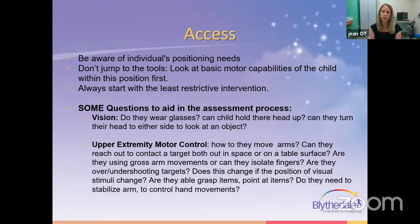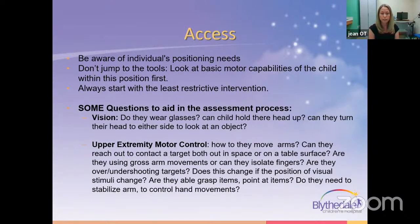During an access evaluation, we assess the child's vision — do they wear glasses, can they visually focus, track, and turn their head to follow an object? We look at upper extremity motor control — can they reach accurately, do you see overshooting or undershooting, can they isolate fingers to select icons on a touchscreen, and can they sustain grasp? We look at all of these things before jumping to different access options.